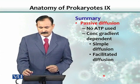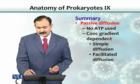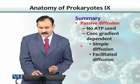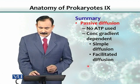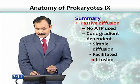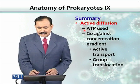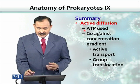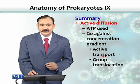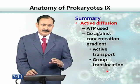In summary, passive diffusion allows molecules to move without ATP, dependent on the concentration gradient. There are two kinds: simple diffusion and facilitated diffusion, which uses a carrier, transporter, or permease protein. Active transport involves ATP, moves molecules against the concentration gradient, and has two kinds: regular active transport where molecules are unchanged, and group translocation where molecules are modified after transport so they remain within the cell.